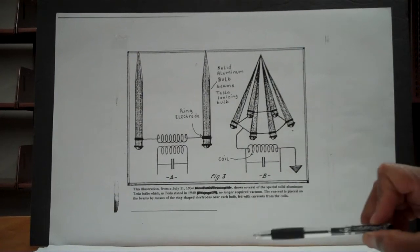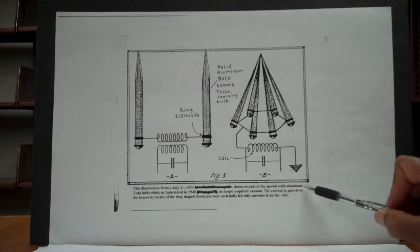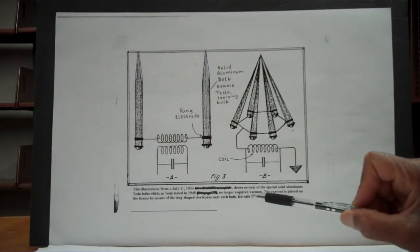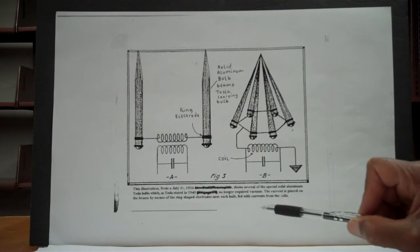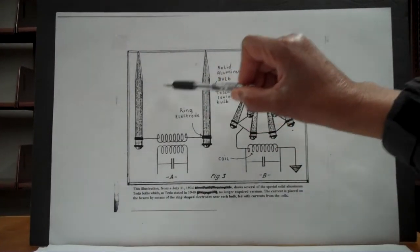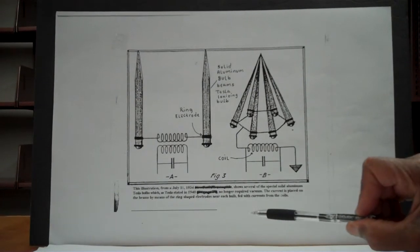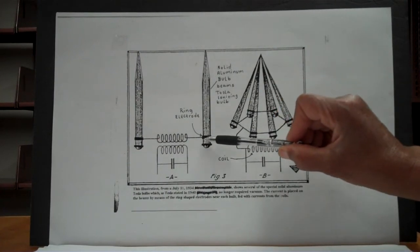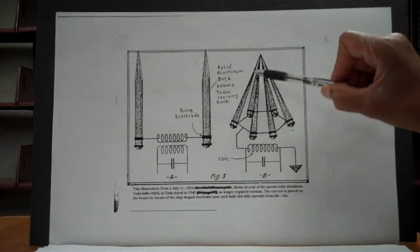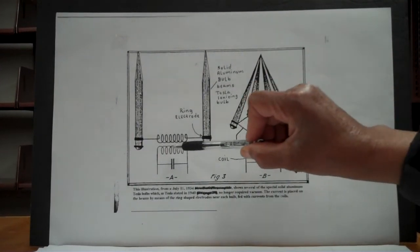This is a Tesla bulb. This illustration is from July 11, 1934, and it shows several of the special solid aluminum Tesla bulbs. Tesla stated in 1940 that these no longer required a vacuum. The current is placed on the beams by means of a ring-shaped electrode near each solid aluminum bulb, and it is fed with currents from the coils.